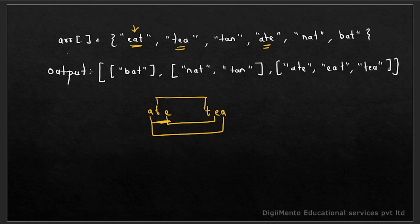So what we have to do: we are given an array and we have to group the anagrams together. Here 'bat' is a single output because if we shuffle it, it won't create any of the other words. Then 'nat' and 'tan' are two anagram groupings because shuffling 'nat' gives 'tan' - the frequency of n, a, t is all one each. The question is: given an array of strings, group all the anagrams together.